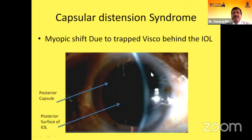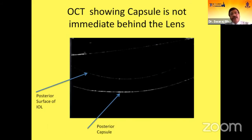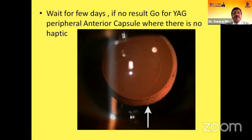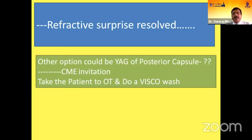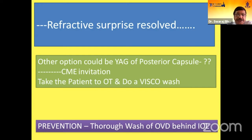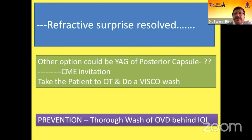Regarding capsular distension syndrome — a very common myopic shift is due to trapped viscoelastic behind the IOL. There is a space between the posterior capsule and the posterior surface of the IOL, which can be confirmed by doing an anterior segment OCT. Management: wait a few days. If no result, go for YAG peripheral anterior capsulotomy where there is no haptic. If refractive surprise resolves, very good. Another option is YAG of the posterior capsule, but there is a chance of developing CME. You can also take the patient to the OT and do a viscoelastic wash. Prevention is thorough washing of OVD behind the IOL.